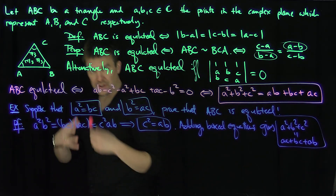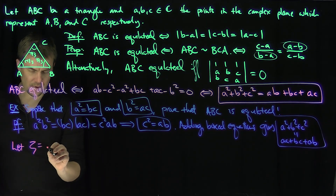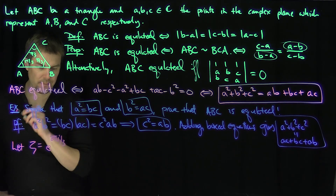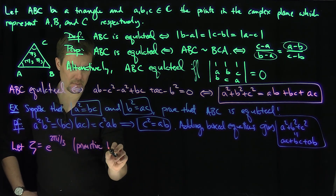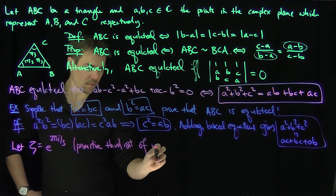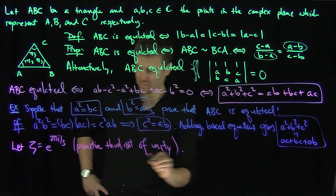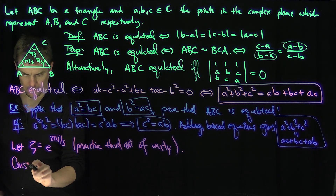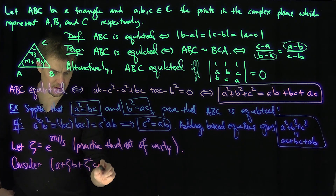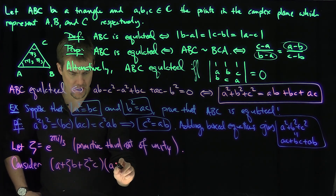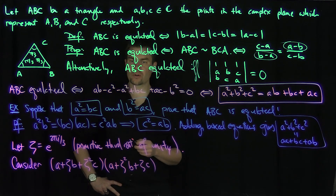Now let's introduce ζ = e^(2πi/3), which is a primitive third root of unity. We'll use this to derive another characterization of equilateral triangles.